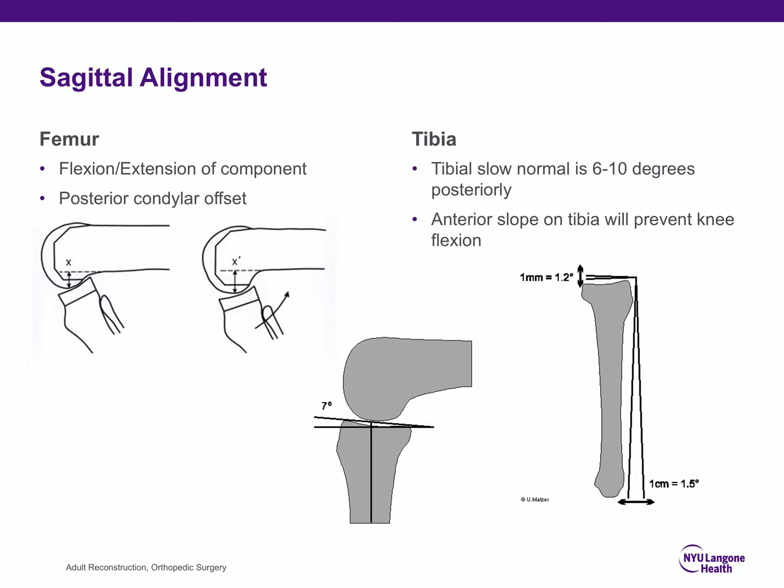Sagittal alignment is important on the femoral side because it affects flexion-extension of your component, which has implications for range of motion, and allows you to assess posterior condylar offset — labeled X on the lateral view — which has implications for flexion and impingement. On the tibial side, the slope of the proximal tibia is critical. Normal is six to ten degrees of posterior slope. Understand that anterior slope will prevent knee flexion.